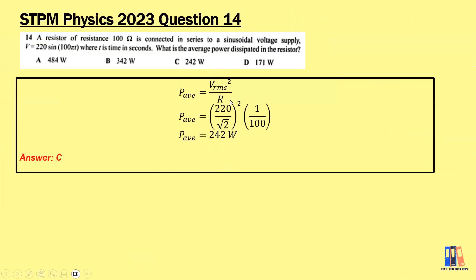We move on to 2023 question. A resistor of resistance 100 ohms is connected in series to a sinusoidal voltage supply. What is the average power dissipated in the resistor? We want to find the average power dissipation where P equals V²/R. We need to use V_rms to have an average or mean power dissipation. The formula V equals 220 sin(100πt), the 220 is the peak voltage. We need to convert this to root mean square voltage first, then apply the formula to obtain the average power is 242 watts. Answer is C.